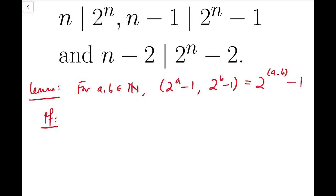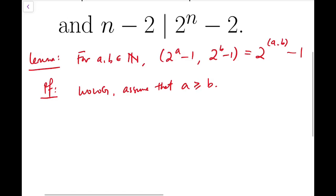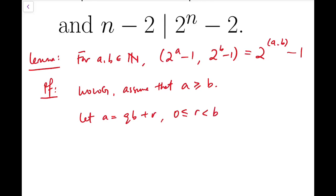To show this, I'm going to imitate the Euclidean algorithm. Without loss of generality, assume that a is the larger one, or they are simply equal. I'm going to let a equal q times b plus r, where q is the quotient and r is the remainder, with r between 0 (inclusive) and b (exclusive).